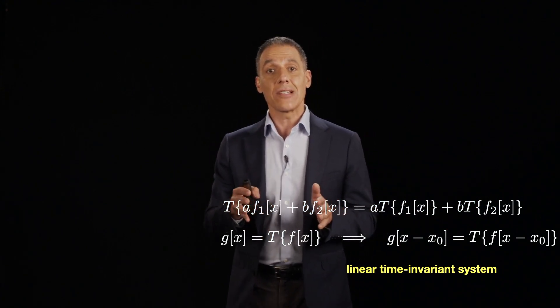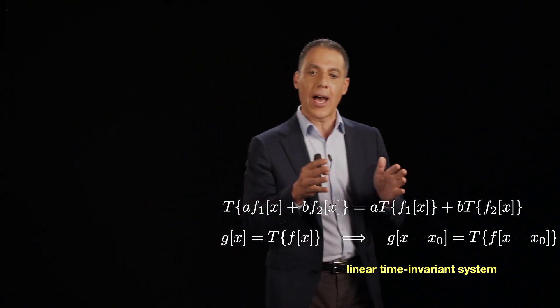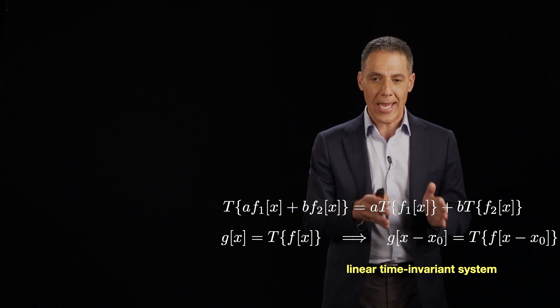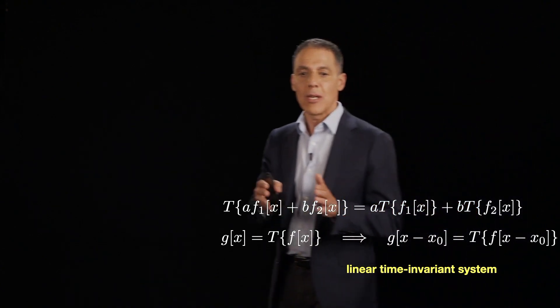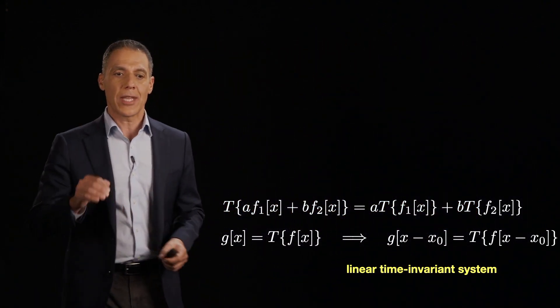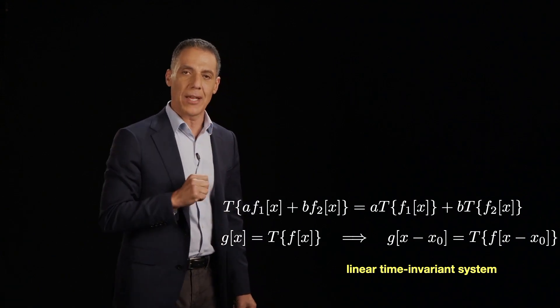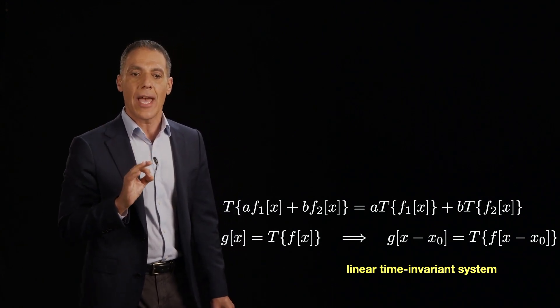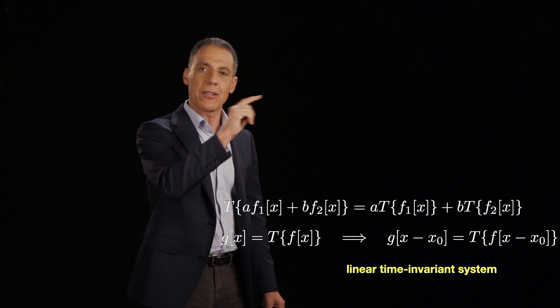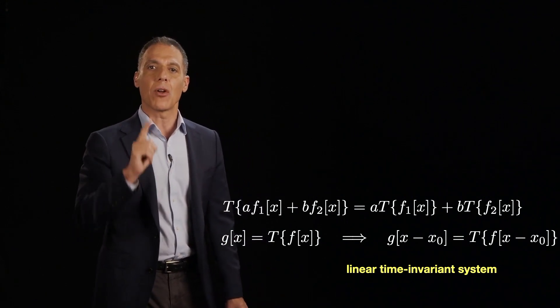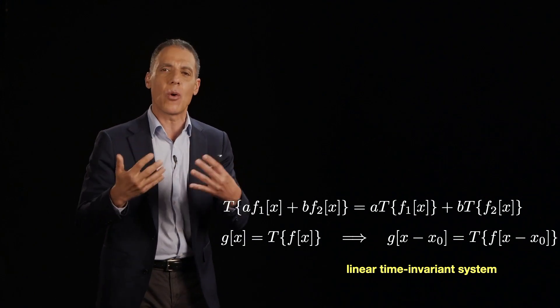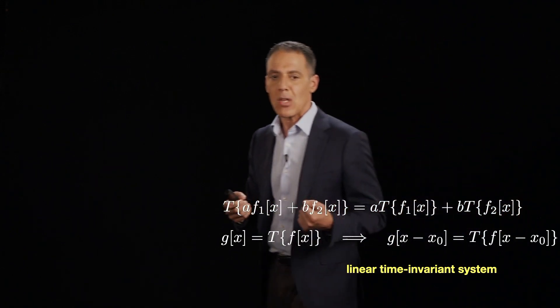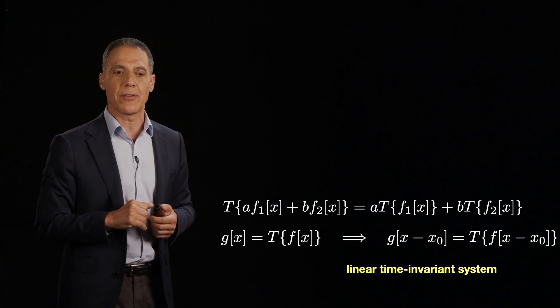And if it's a linear system, then out of the other side comes a scaled version of the first signal put through the system. So a times T{f_1} plus b times T{f_2}. So what that means is I can take two signals, sum them up and multiply them by a value and sum them up and put them into T. And that is exactly the same as putting f_1 into T, multiplying the result by a, put f_2 into T, multiply the result by b and then sum them up. So I'm just changing the order. That of course is the very definition of a linear system. So that deals with the linear part of an LTI, linear time invariant system.